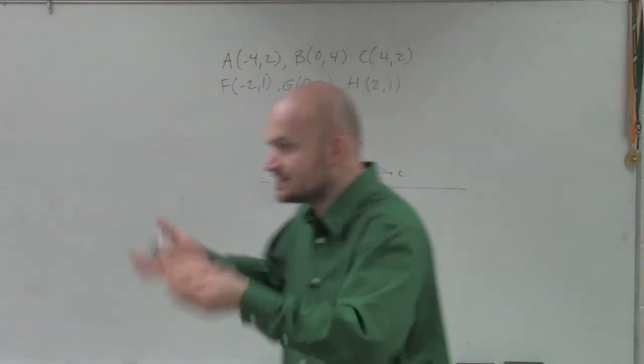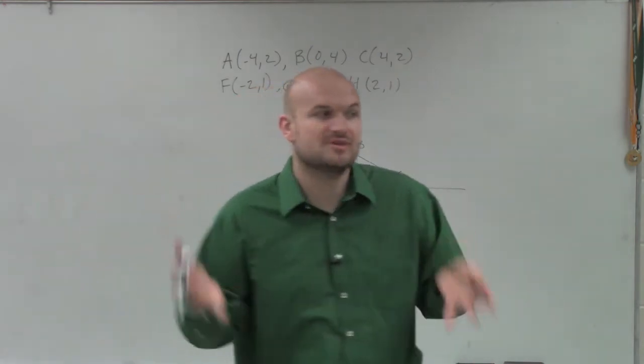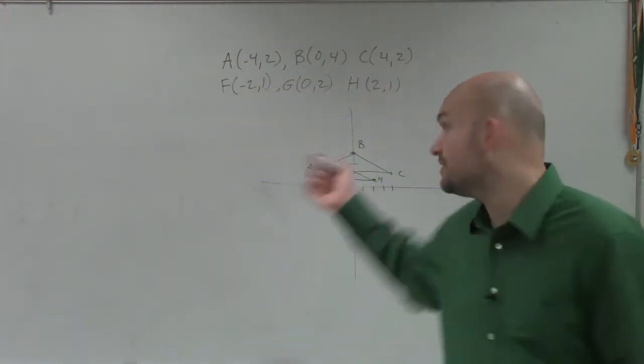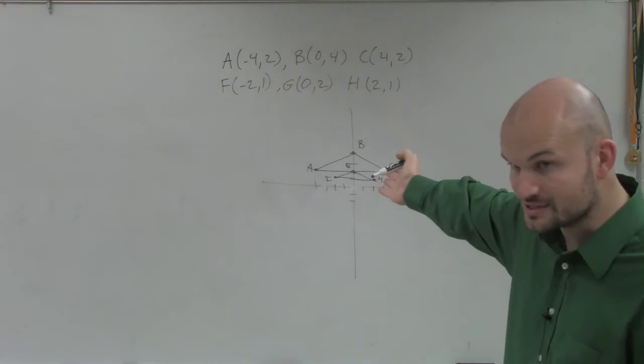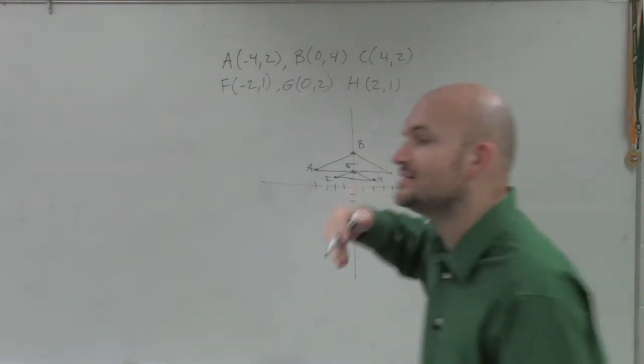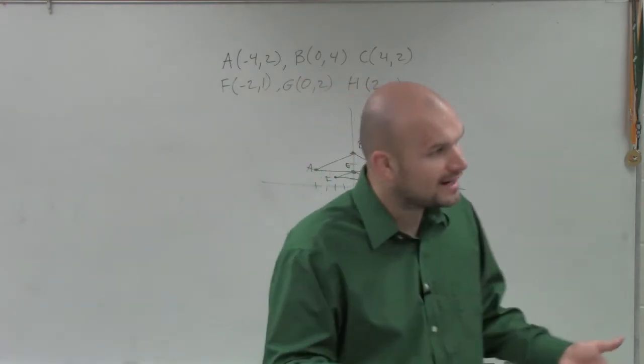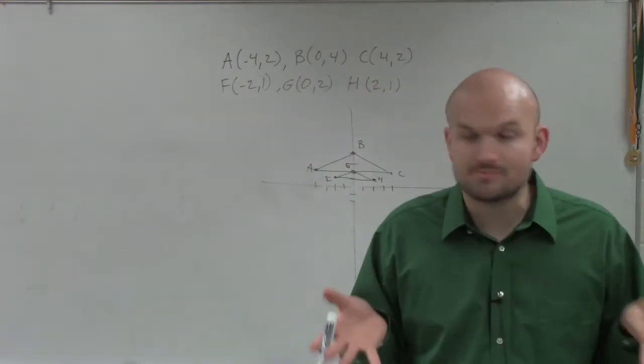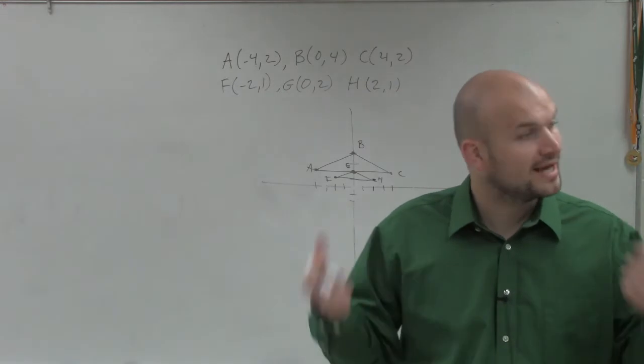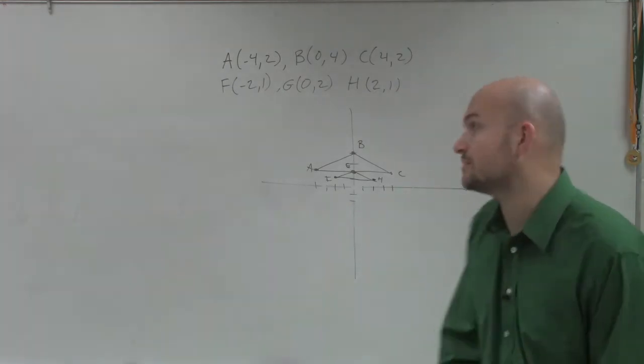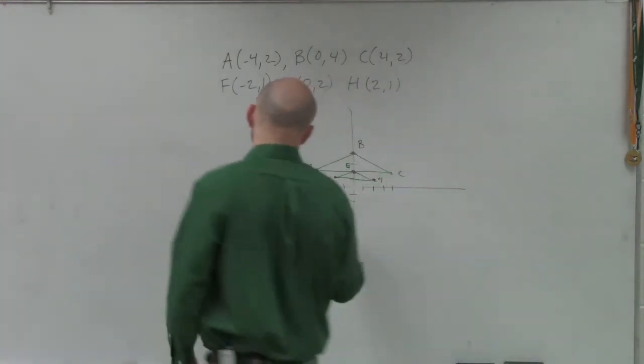Because remember, congruency, we have to have side, side, side, angle, side angle, same size, same shape. But similarity, since we know they're not obviously the same size, that's obvious. All they have to do, though, is be the same shape. So to prove that they're the same shape, we just need to create a ratio of sides, corresponding sides, that creates a proportion. Then we cross multiply, and if that is equal, we know we have similar objects. In this case, similar triangles.